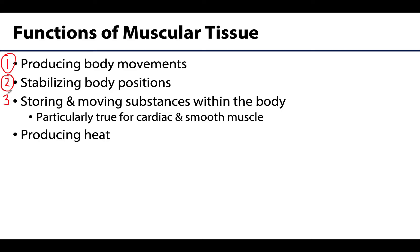Next is storing and moving substances within the body. This is an important function of cardiac muscle, which moves blood throughout the body, and smooth muscle, which moves substances like food, bile, sperm, and oocytes, to name a few. Skeletal muscle also plays indirect roles in directing the flow of lymph as well as deoxygenated blood through lower limb veins, though not as large a role as cardiac and smooth muscle.